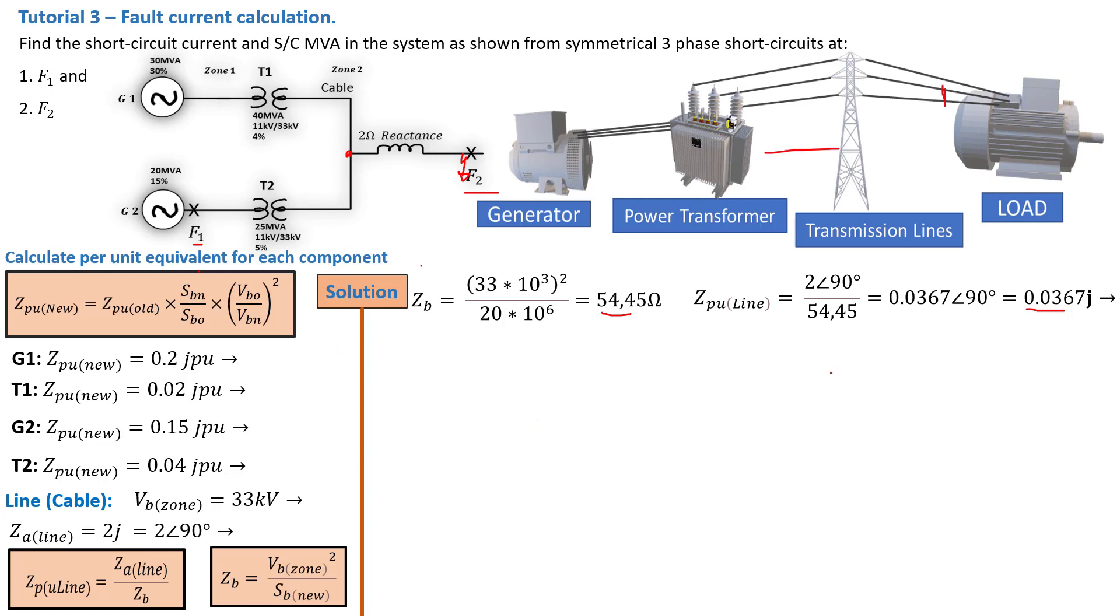Now at this point, what you've done so far is you've converted this network here into a per unit network, an equivalent per unit impedance diagram. So you then need to redraw your circuit. That will be simply by replacing each one of these components with the equivalent per unit that you've just calculated. So G1 will be represented by 0.2 per unit, and G2, T1, and T2 as we've calculated. Your line will also be represented by the value that we've calculated there.